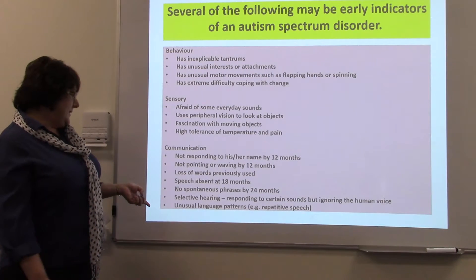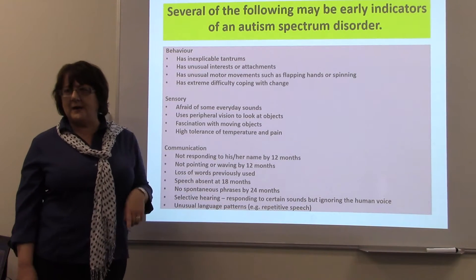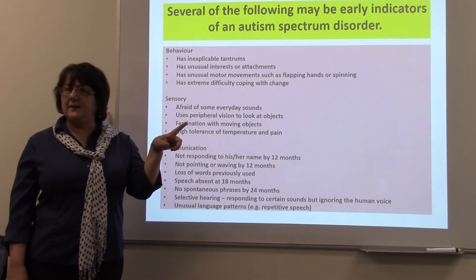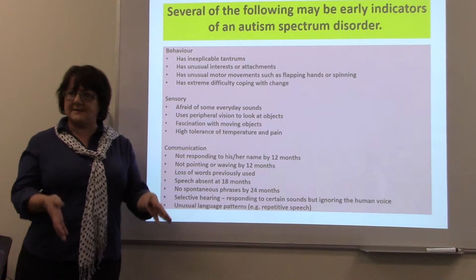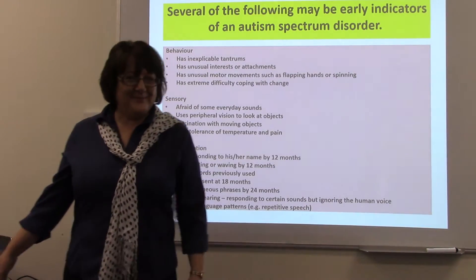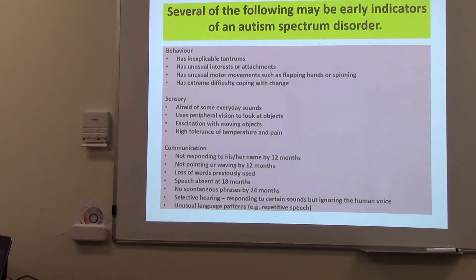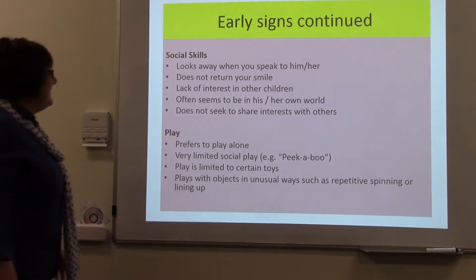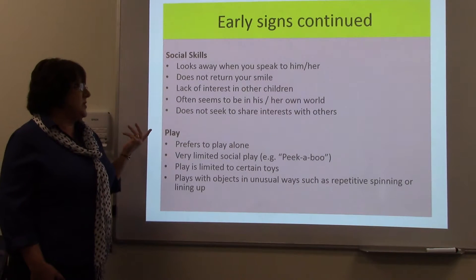Other indicators include: absence of speech, no spontaneous phrases, selective hearing — responsive to certain sounds but not the human voice — and unusual language patterns. Repetitive speech is called echolalia. They'll often repeat something heard on TV or in a movie — three, four, or five words — and the mom could be very happy because it sounds like a sentence. They might also look away when you speak to them, not return your smile, show lack of interest in other children, and often seem to be in their own world.